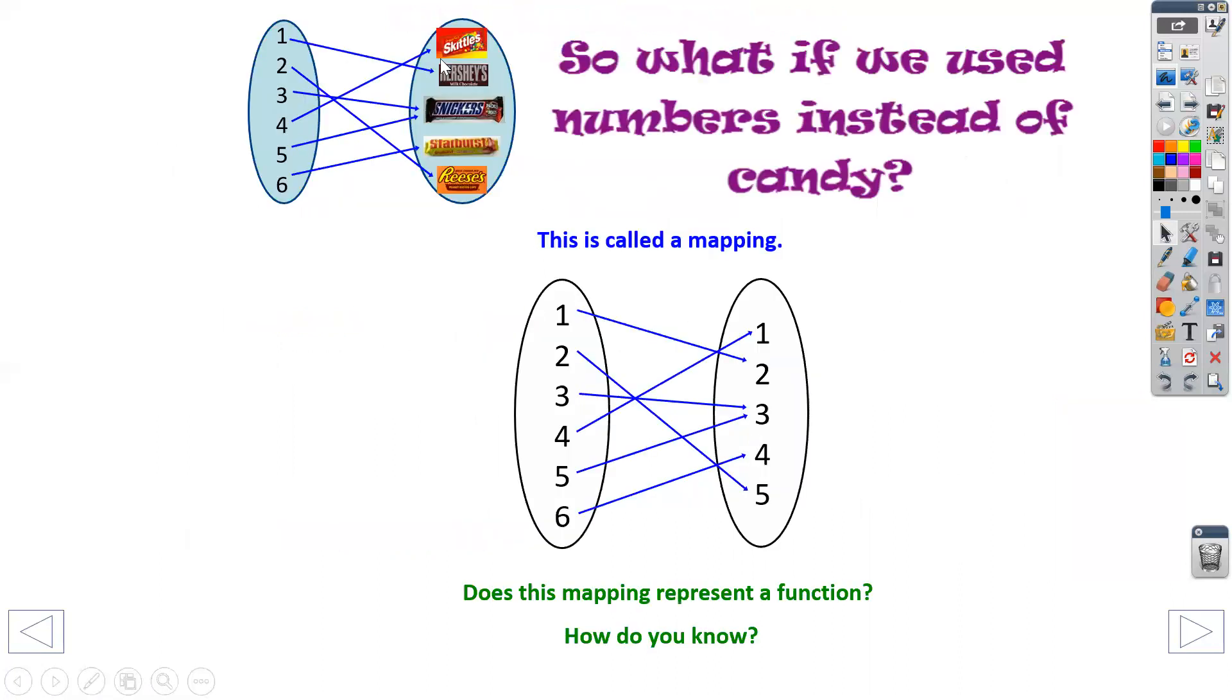So instead of candy bars, I could replace everything with a number. So in this case, instead of Skittles and Hershey's, Snickers, and so on, I just replaced it one, two, three, four. This is called a mapping.